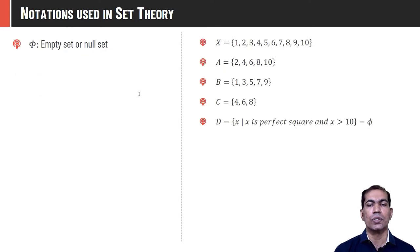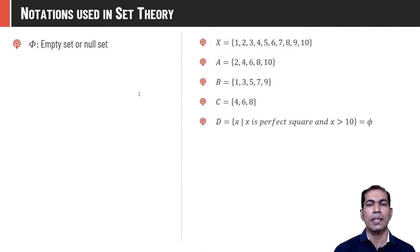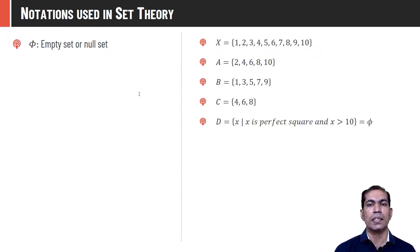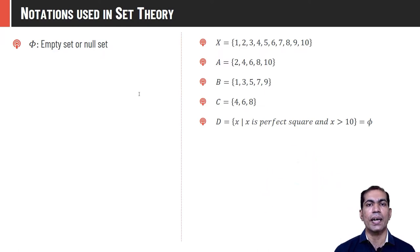Let's discuss various notations used in set theory. Capital X is the universe of discourse consisting of 1 to 10. A is the set of even numbers, B is the set of odd numbers, C contains {4, 6, 8}. D is the set of all perfect squares less than 10 — but 1, 4, and 9 are perfect squares but not less than 10, so no elements satisfy D's property. Hence D is a null or empty set.